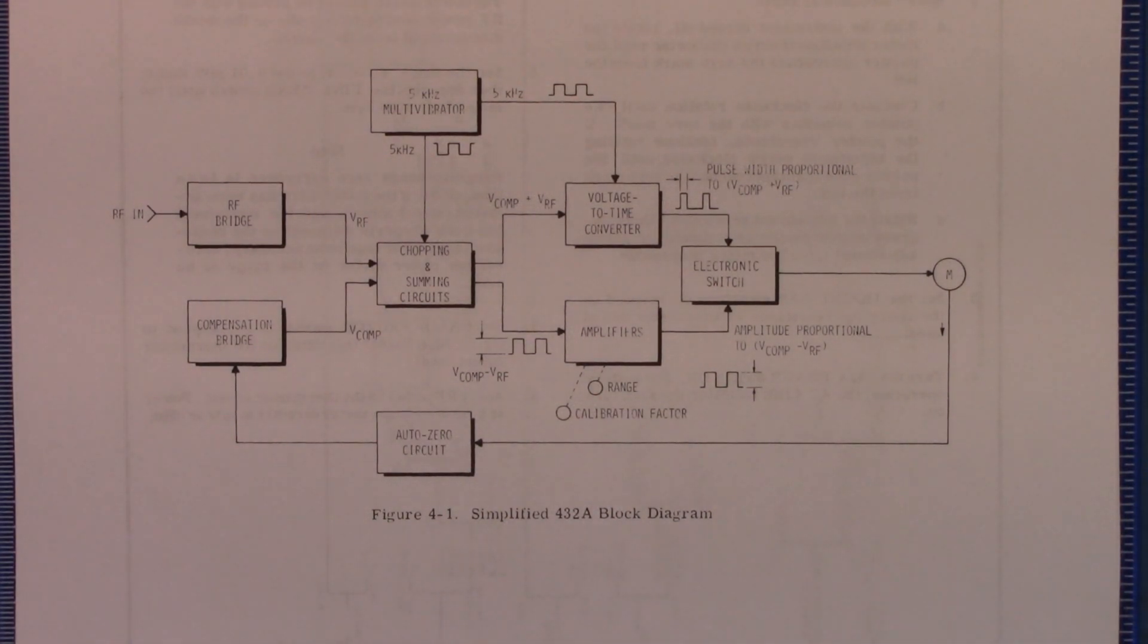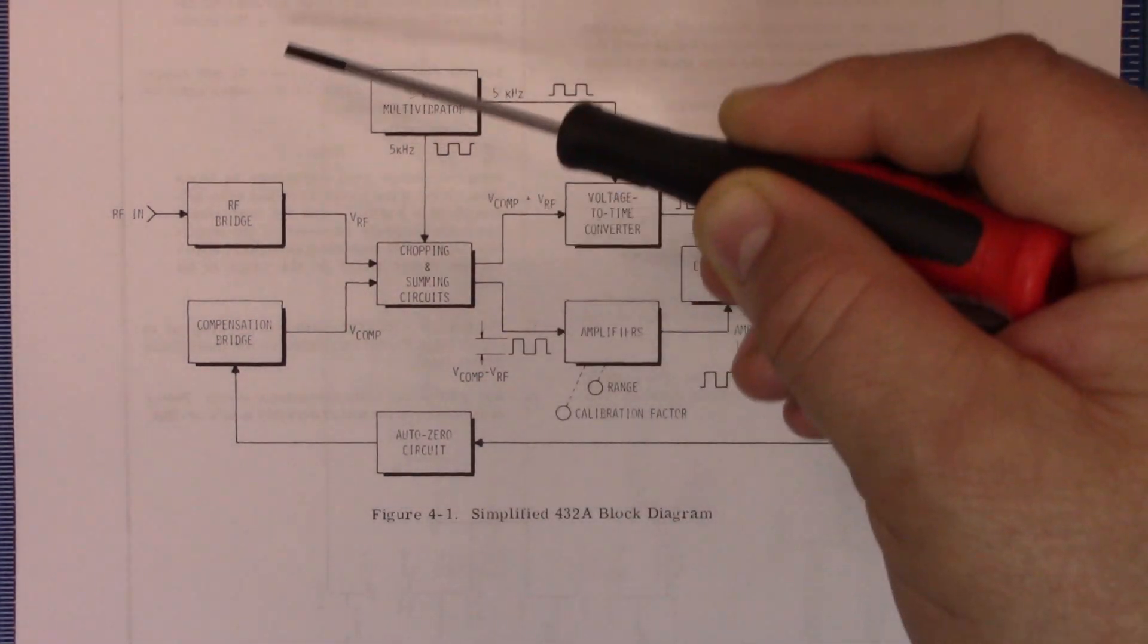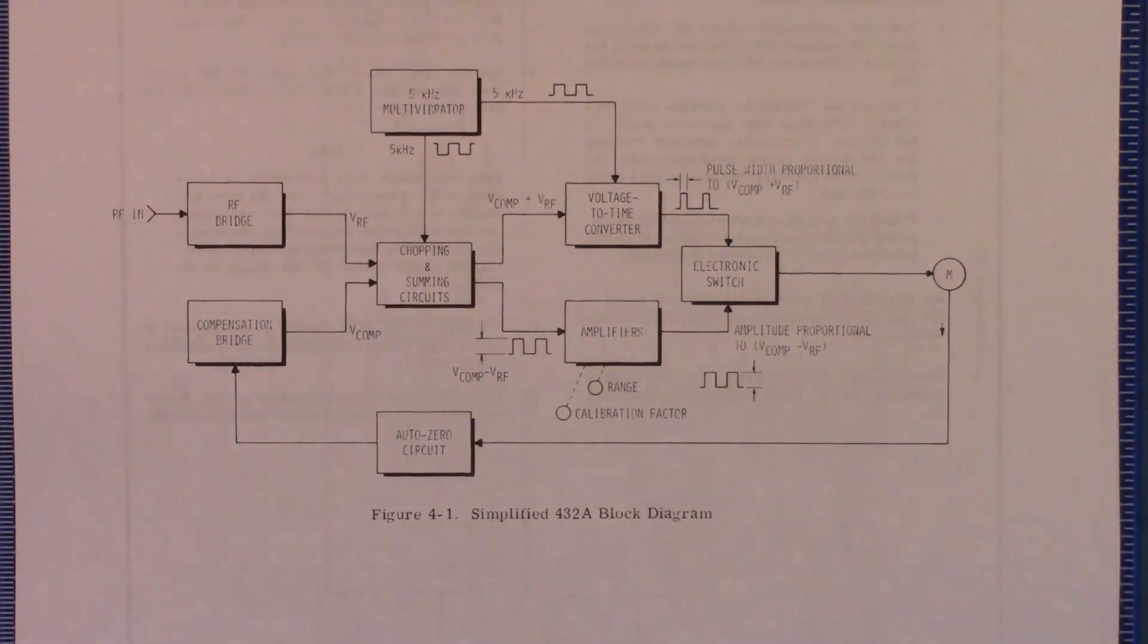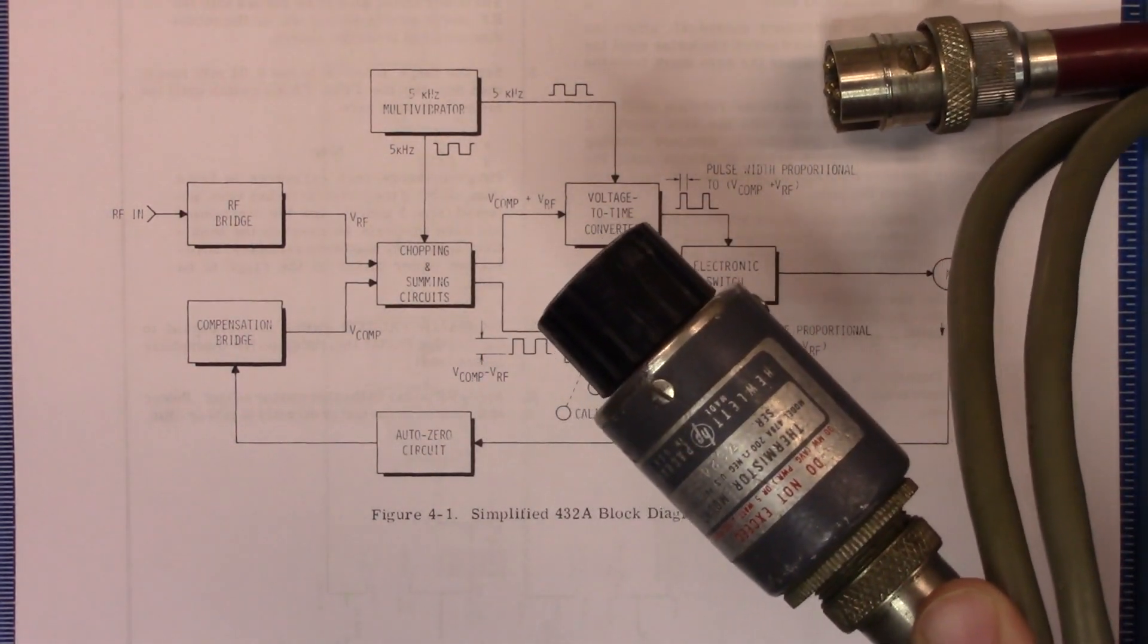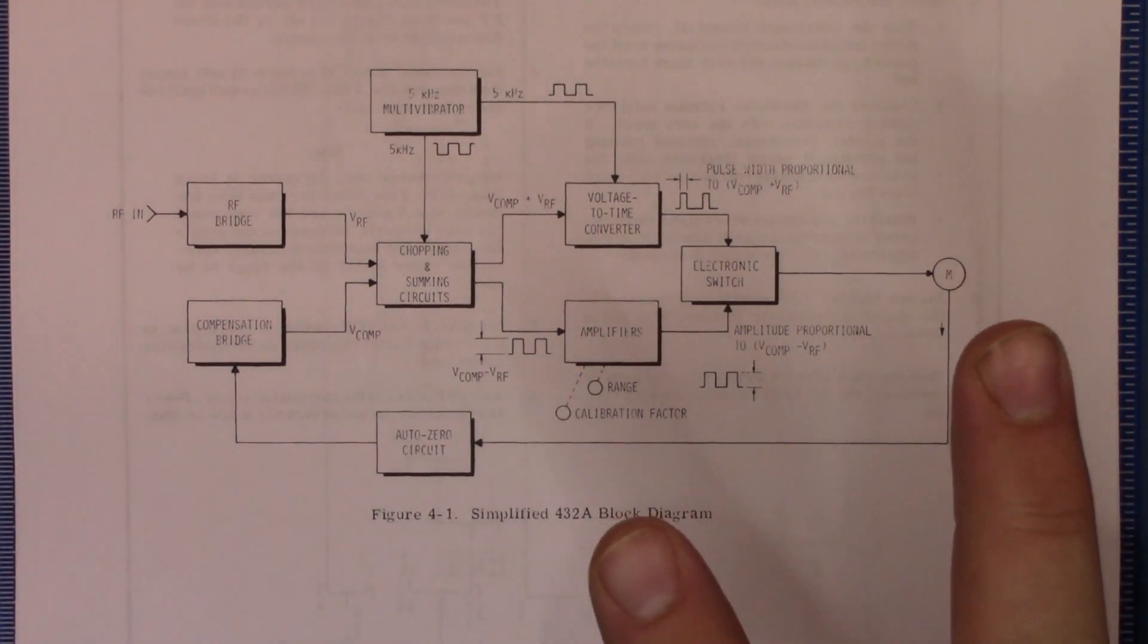Well, here we have the simplified block diagram. And what this unit is, is basically the meter part here and then a thermistor mount that looks around or splits out this part here. Those thermistor mounts are typically these guys here. This is a 478A thermistor mount. And basically what those thermistor mounts have are two thermistors in them.